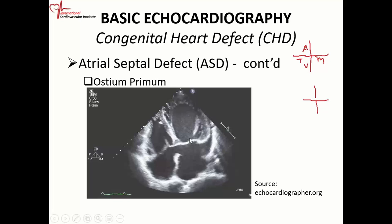Looking at the image, you can see that these valves are on the same plane — no valve is lower than the other. The defect is in the lowermost portion of the atrial septum. This is an ostium primum defect. You cannot close this percutaneously, and these patients need antibiotic prophylaxis.